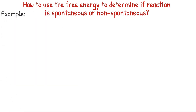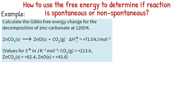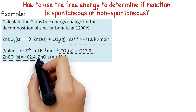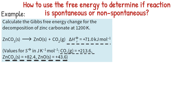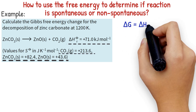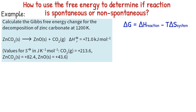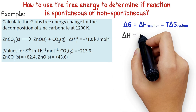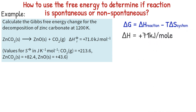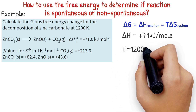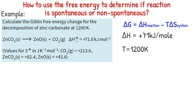Example 2: Calculate the free energy change for the decomposition of zinc carbonate at 1200 Kelvin. The enthalpy change of reaction and the entropy values for each compound are given. The free energy, noted by delta G, is equal to the enthalpy change minus temperature multiplied by the entropy change of the system. The enthalpy change equals 71 kilojoule per mole, and temperature equals 1200 Kelvin. We don't have the entropy change of the system, so we need to calculate it.